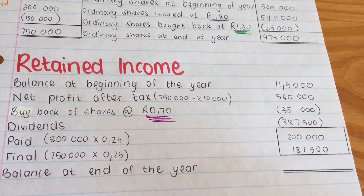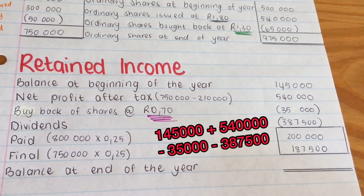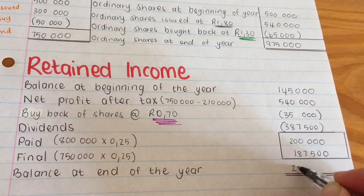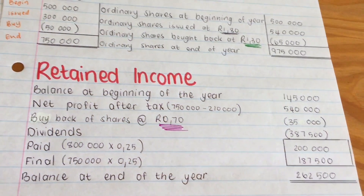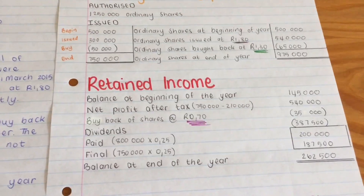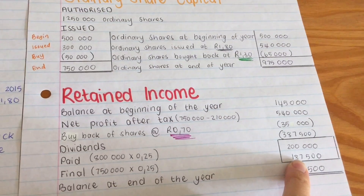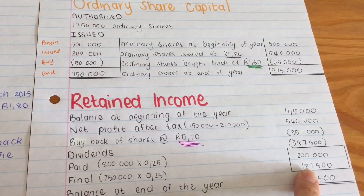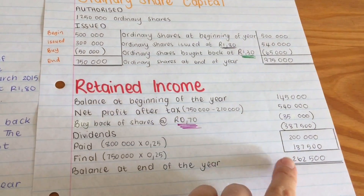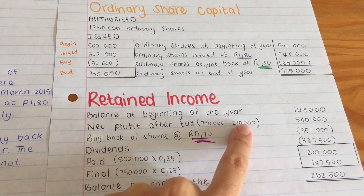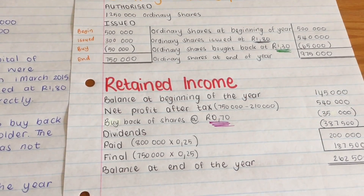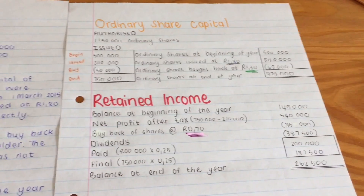Then I take the opening balance, add the net profit after tax, subtract the R35,000 buyback loss, and subtract the dividends to get the closing balance for retained income at the end of the year. Very importantly, the final dividend amount must also be entered in Note 9, the creditors note, when we do the balance sheet — don't forget to copy that amount there. The income tax amount must also be compared with taxes already paid, as the difference may also need to go to Note 9 if we paid less than we should have. I really hope this helps and that you understand a bit more. Good luck.